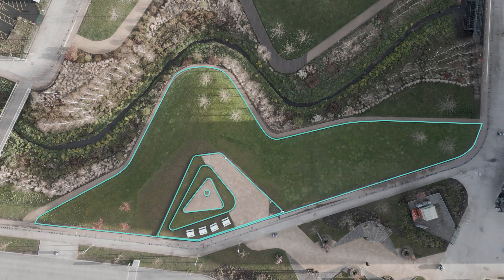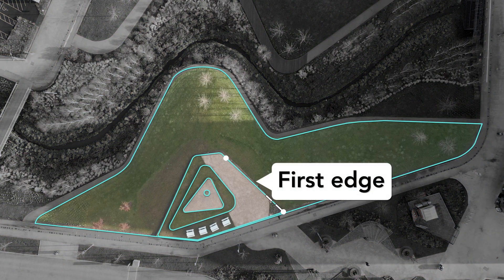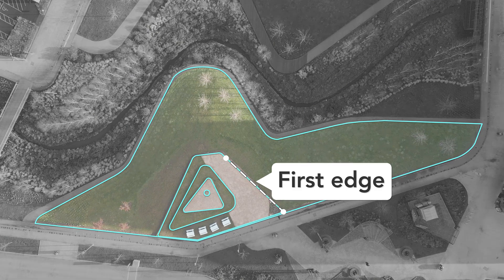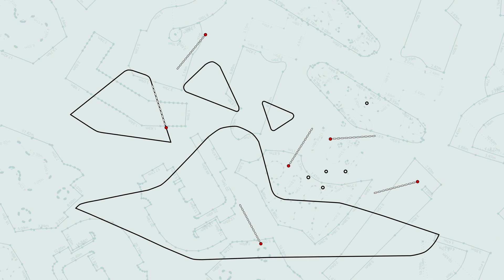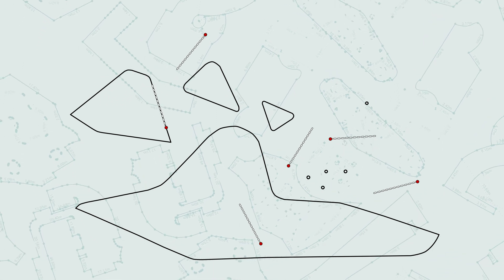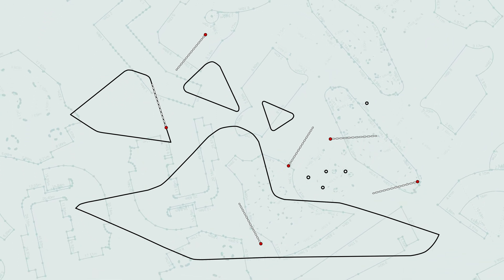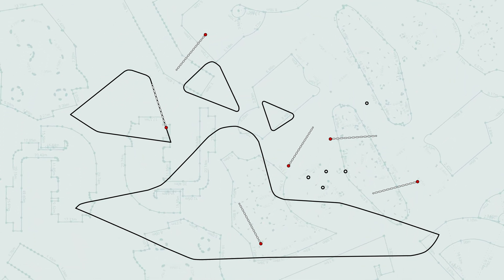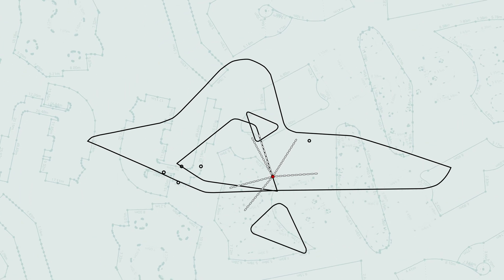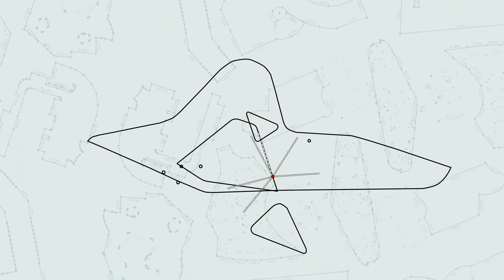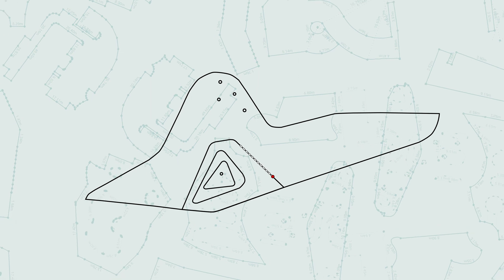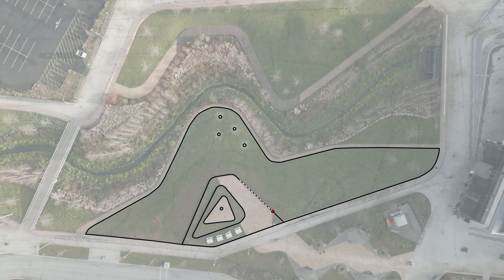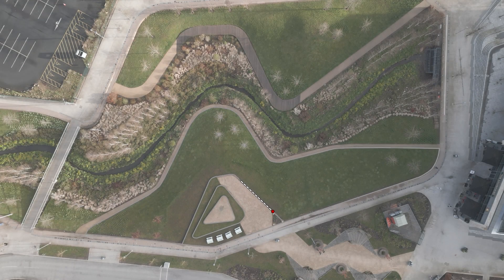The way we're able to place each layer accurately is by using the first edge. We recapture the same first edge for each layer that we want to add. The app uses this as a reference line to correctly align all the layers. All the shared origins are grouped to a single point and then each layer is rotated so all the first edges are in alignment, ensuring that all the layers are placed correctly.